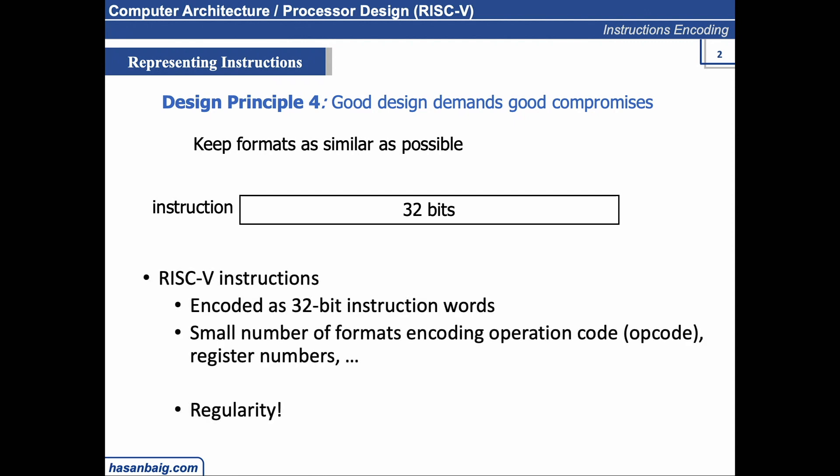We encode instructions in 32 bits using a small number of formats. These 32 bits are divided into segments. One segment may correspond to the register number, another field may correspond to immediate data, and another to the opcode. Opcode refers to the operation code - what operation you want to perform, like add, sub, or shift left.